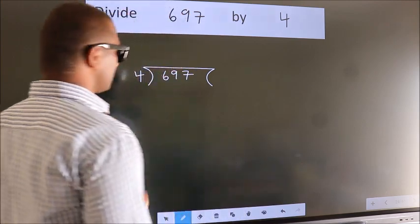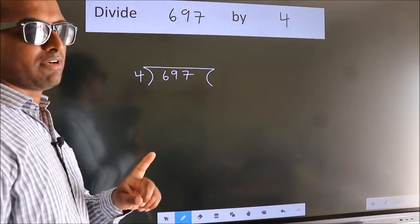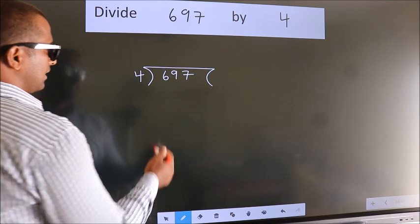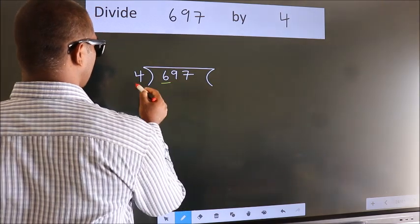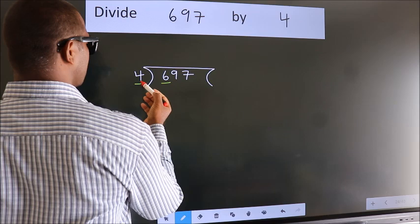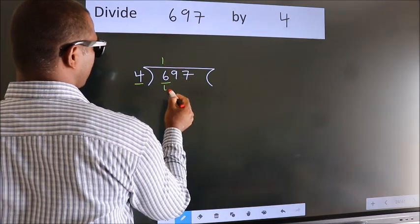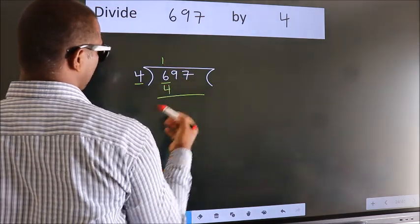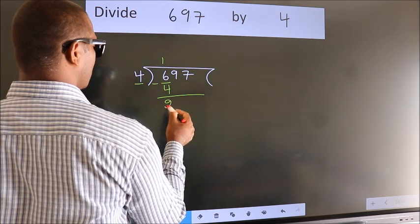This is your step 1. Next, here we have 6, here 4. A number close to 6 in 4 table is 4 ones, 4. Now we should subtract, we get 2.